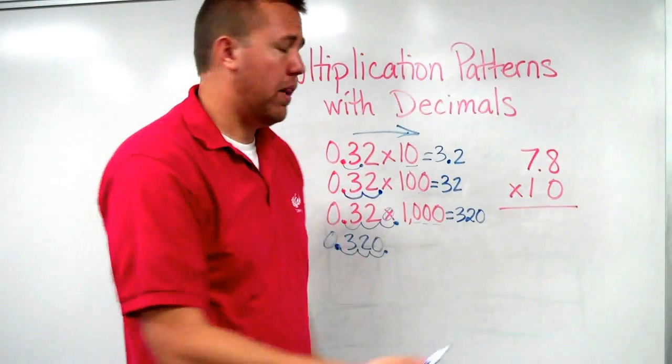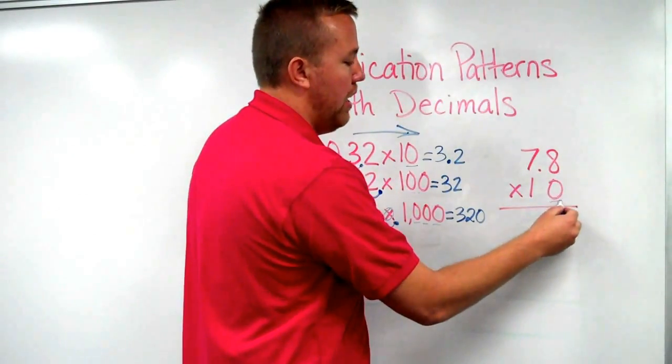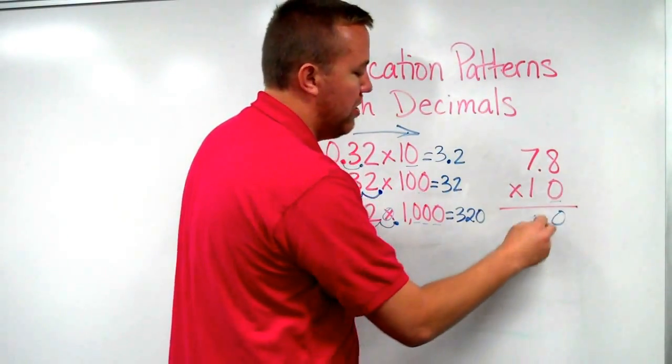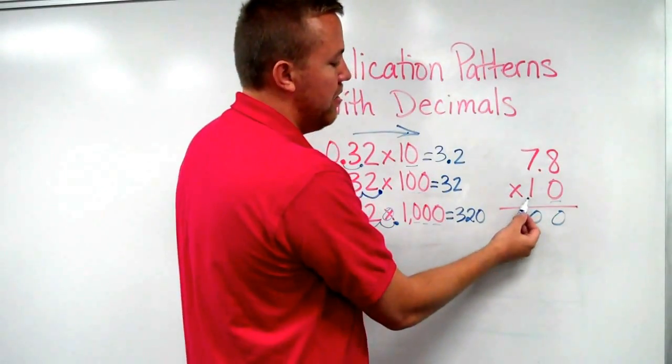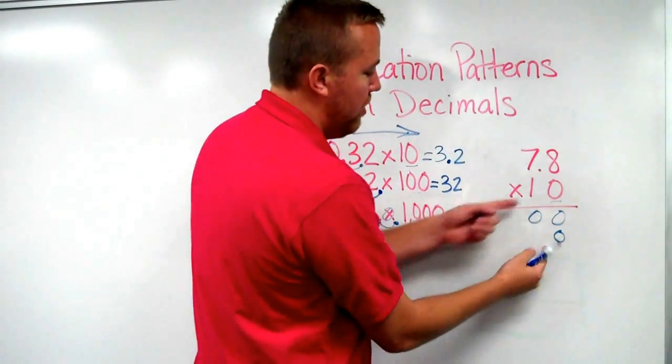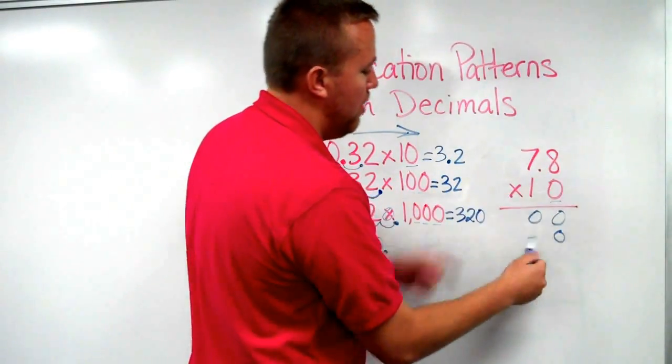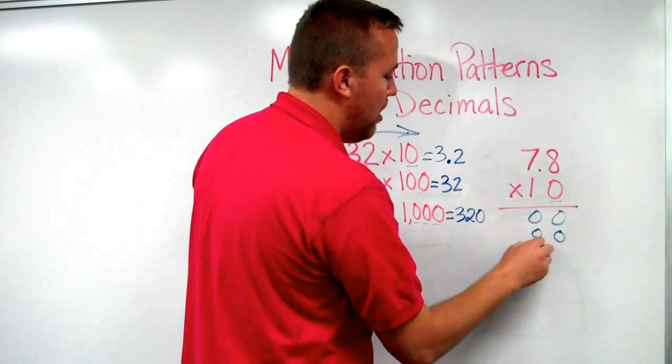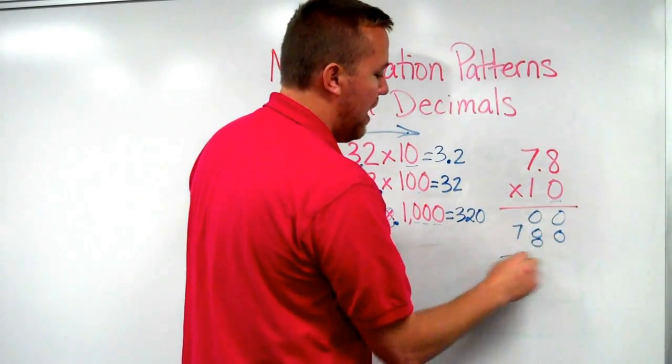The reason it doesn't work with the algorithm, we start right here. 0 times 8 is 0, 0 times 7 is 0. This is actually the 10, so I have the 0 there. Sometimes in 10, times 8, which is 80. So 1 times 8 is 8, and 1 times 7 is that.